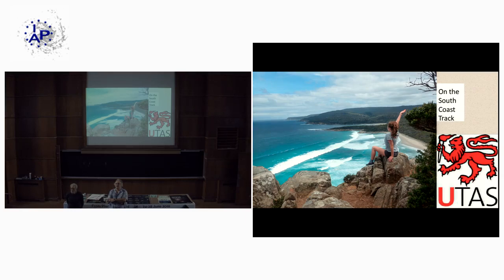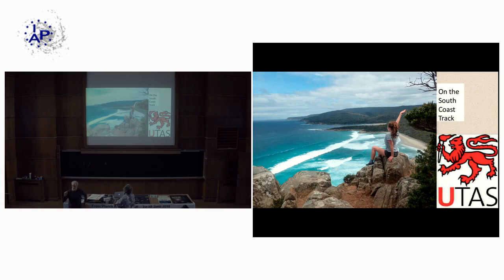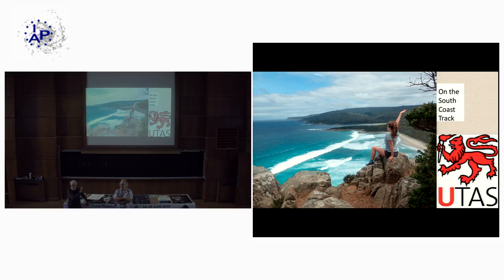A final question: why is there a lion on the University of Tasmania logo? What I think that should be is the Tasmanian tiger — a marsupial animal more like a wolf than a tiger, which went extinct in the early 1900s. The lion probably comes from Great Britain. Thank you all.